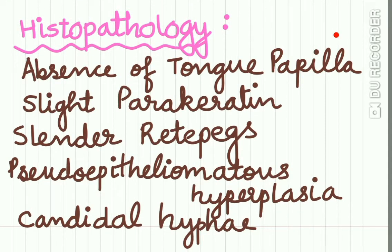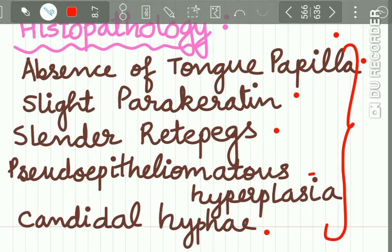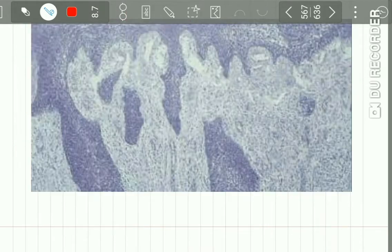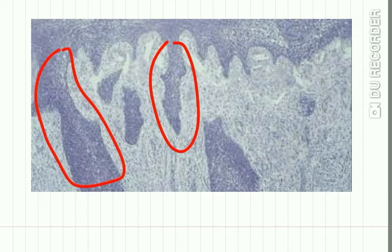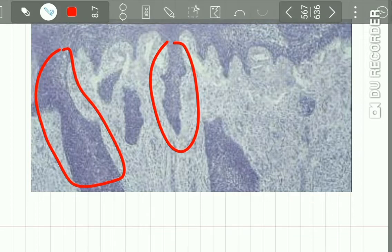Histopathology shows absence of the tongue papillae. A slight parakeratotic layer may be seen. The rete pegs are slender and thin. Pseudo-epitheliomatous hyperplasia may be seen, and candida hyphae. These are the characteristic features of central papillary atrophy — slender rete pegs, slight parakeratotic layer, pseudo-epitheliomatous hyperplasia in some regions, and candida hyphae.